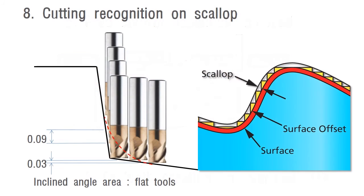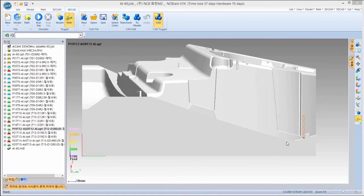After rest finishing with ball endmill, there should be some rest scallops, especially on inclined area. To get rid of these scallops, AI Cam uses flat endmill with different z-height of toolpath. Let's see in Demo.